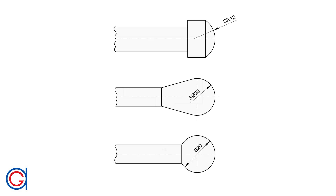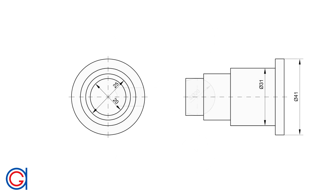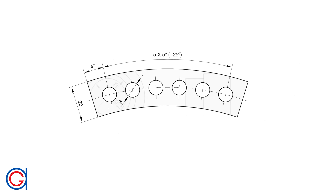A dimension is a numerical value expressed in appropriate units of measurements such as millimeters, inches, centimeters, etc., and they are used to define the size, location, orientation, shape or other geometric characteristics of an object.